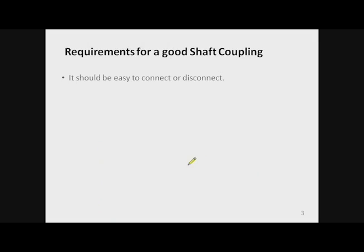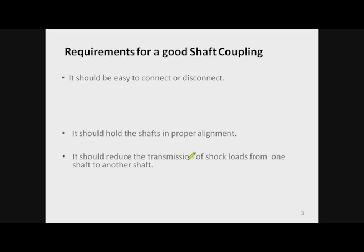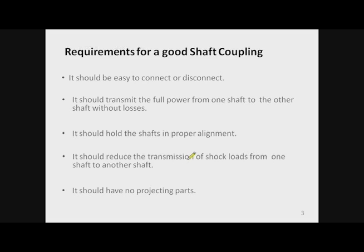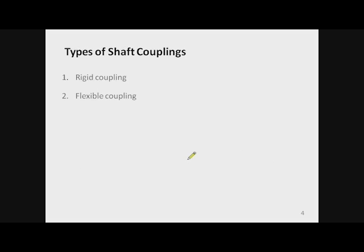Apart from this, shaft coupling has many other applications, like a generator joined to a diesel engine, or a compressor driven by a motor. Many requirements must be satisfied for a good shaft coupling: it should be easy to assemble and disassemble, hold the shafts in proper alignment, be able to reduce or absorb shocks, and not have any projecting parts, otherwise it may harm others in case of breakage of bolts.